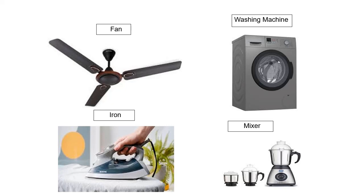This is a mixer. A mixer is a kitchen appliance used to grind food material and make a fine paste. This is a tube light. A tube light is fitted in every room of a house, office, schools, hospitals, etc.